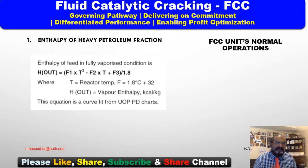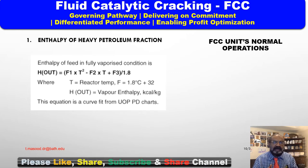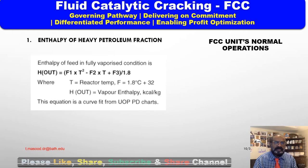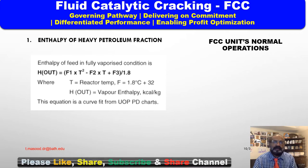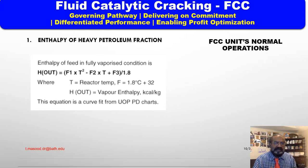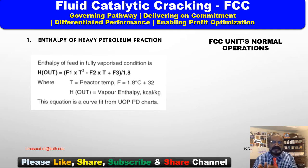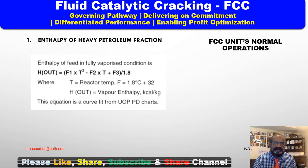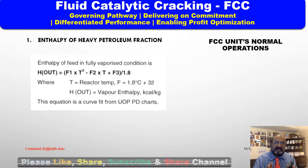Enthalpy of heavy petroleum fractions — heat out. The enthalpy of feed at fully vaporized condition: heat out = (f1 × T² − f2 × T + f3) ÷ 1.8, where T is the reactor temperature in degrees F = 1.8°C + 32. Heat out is the vapor enthalpy in kcal/kg; this equation is derived from the UOP PD chart.